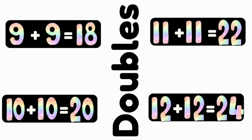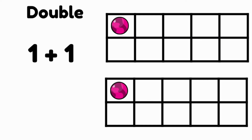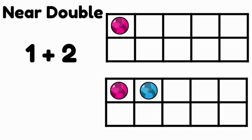The next thing we need to know is: what does a near double actually look like? Let's have a look at this one — one plus two. Our numbers are close together. The double we're looking at is double one. This is what double one looks like, and the near double is one more: one plus two. So we can use our knowledge of double one to solve our near double.